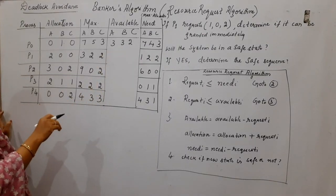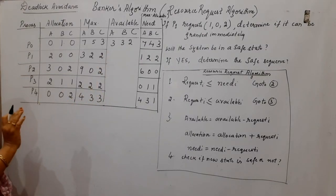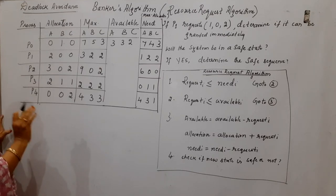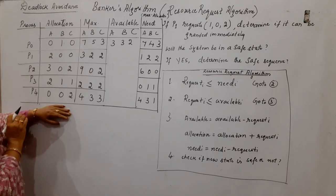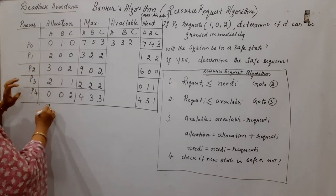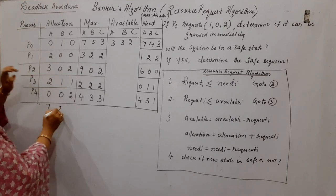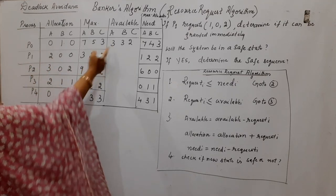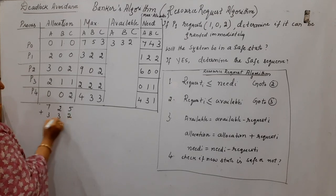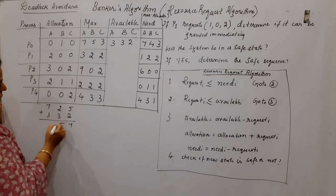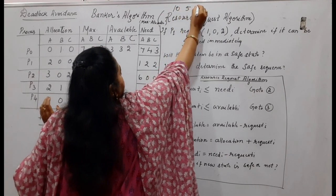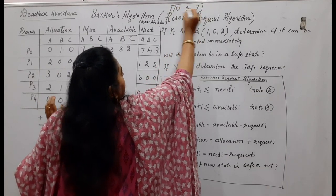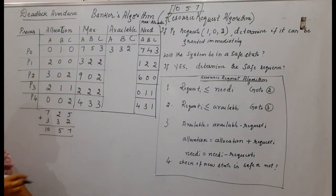Before starting to solve the problem, find the total number of instances of all resources available in the system. Add up all column values of the allocation: 5,6,7 — wait, 1+1=2, 2+2=4, 5 — plus available 3,3,2. This gives 10,5,7. That means 10,5,7 instances of A,B,C are available in the system total, and you can use this to verify your answer at the end.